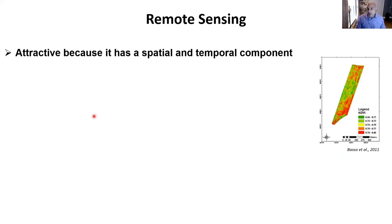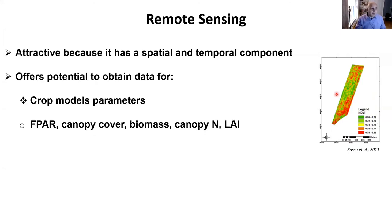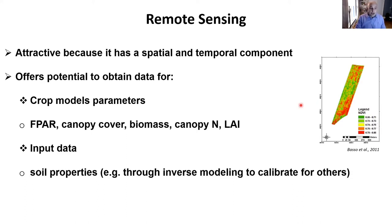This is where remote sensing comes into play as an attractive alternative. It offers two components: a spatial component — a given image at a given point in time gives a nice indication of how a crop is performing spatially within a field — and a temporal component, where multiple images during the growing season allow you to quantify how the crop behaves in both space and time. This offers potential for obtaining data on fraction of photosynthetically active radiation, canopy cover, above-ground dry biomass, canopy nitrogen, and soil properties.